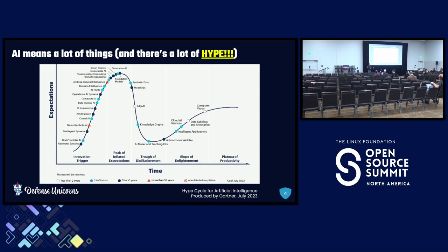So, AI — artificial intelligence — means a lot of different things, and there's a lot of hype here. Gartner puts out these hype cycle graphs for different emerging technologies, showing how public perception and hype goes over the life cycle of a technology. This one is for artificial intelligence. Each of these dots represents different flavors or sub-genres of AI. We go left to right on the time axis, and expectations along the vertical axis. Whenever a new innovation happens, people get super excited and we hit a peak of inflated expectations. Then they realize maybe it's not everything it was cracked up to be, and we sink into the trough of disillusionment before eventually things mature — we pass the slope of enlightenment onto the plateau of productivity.